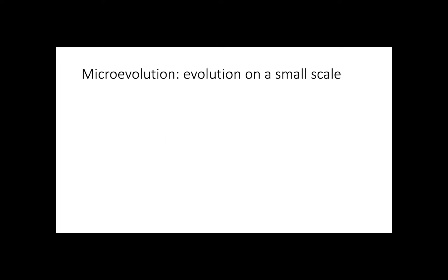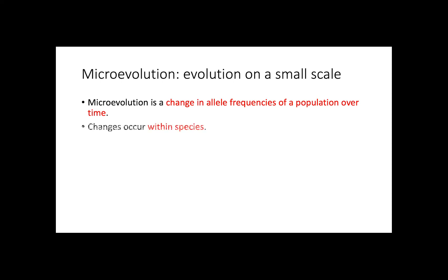This video will be about microevolution and macroevolution. Microevolution is evolution on a small scale and it is the change in allele frequencies of a population over time. These changes occur within species and microevolution can be observed over short periods of time.